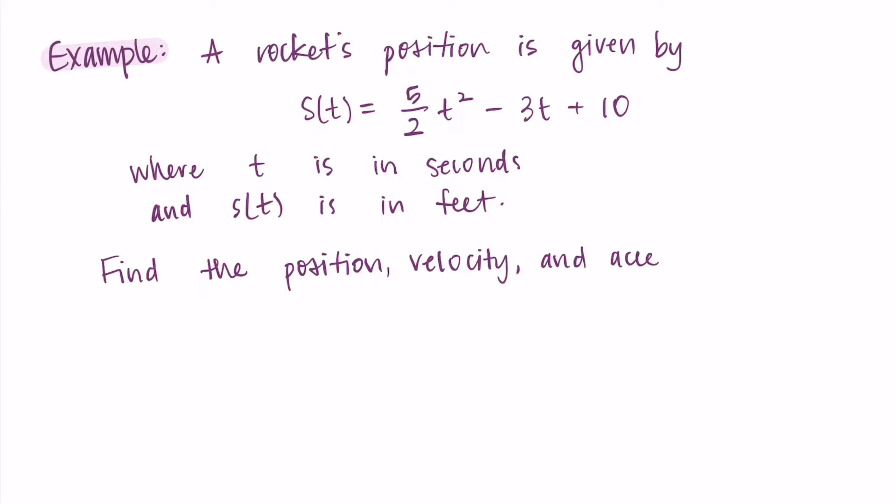So first to find the position, I'm just going to plug in two for time into my original function. So I'm getting (5/2) times 2² minus 3 times 2 plus 10. I'm just going to go through and simplify that. So I have (5/2) times 4 minus 6 plus 10. That's 10 minus 6 plus 10, so I'm getting 16 feet.